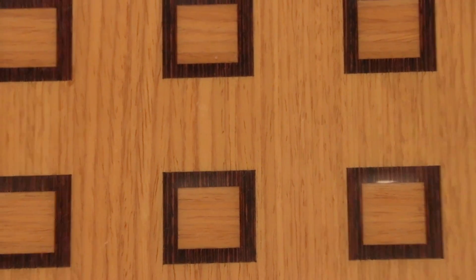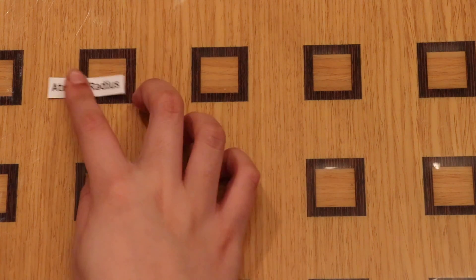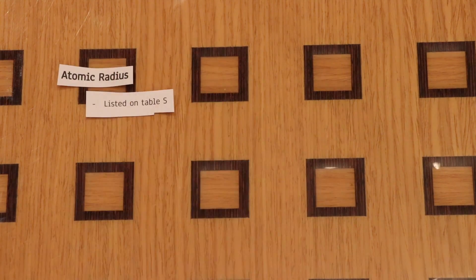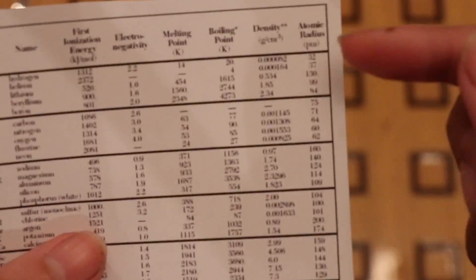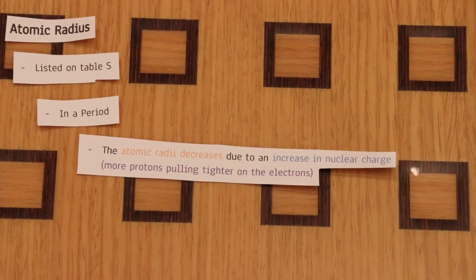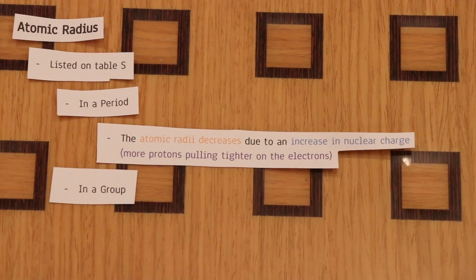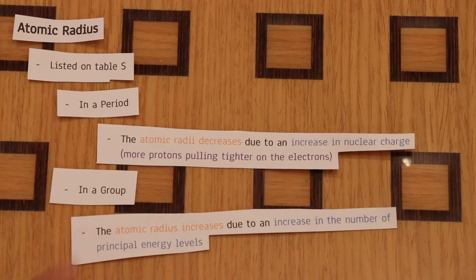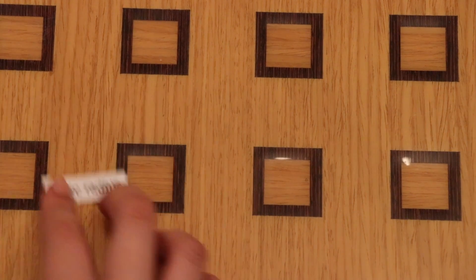Now let's move on to something different but also necessary for the test. The atomic radius is listed on Table S. In a period, the atomic radius decreases due to an increase in nuclear charge — more protons pull tighter on the electrons. In a group, the atomic radius increases due to an increase in the number of principal energy levels.